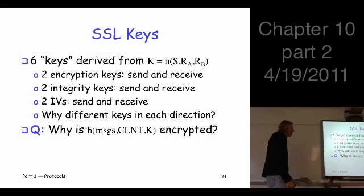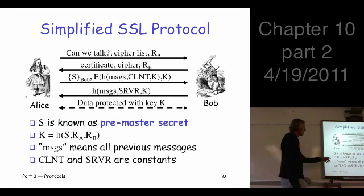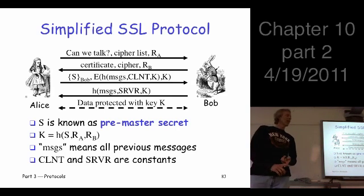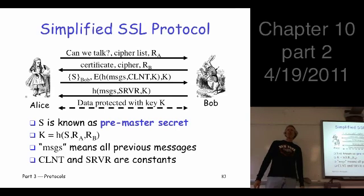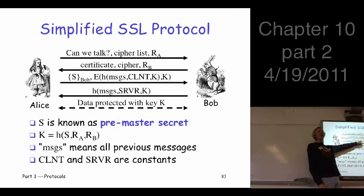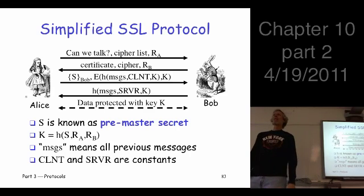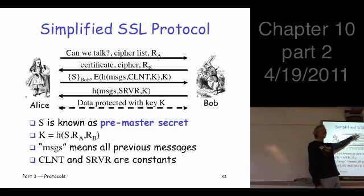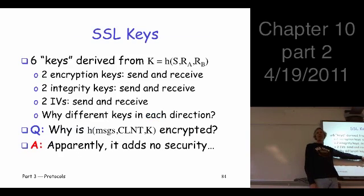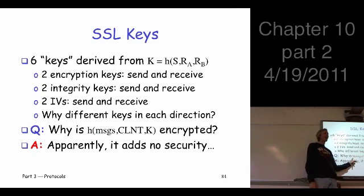Here's an interesting question — we hash this thing with key K, then encrypt the result with key K. What are we trying to accomplish? Why do we hash and why do we encrypt — why do both? This doesn't authenticate Alice. So what's the point? It's just a kind of integrity check — we're checking the previous messages. But why hash and then encrypt? It's extra work to encrypt, and it doesn't tell you any more because if the person already knows K they can encrypt, and if they don't know K they can't compute the hash anyway. So why do both?